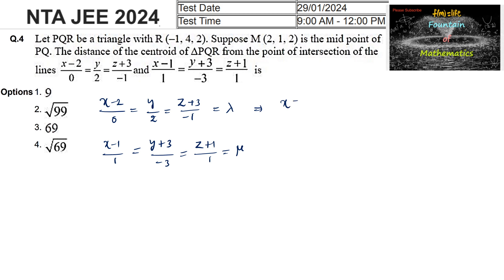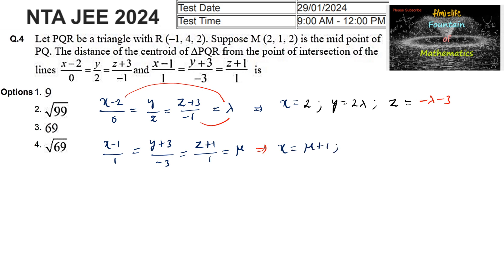From the first line, x−2 = 0·λ gives x = 2, y = 2λ, and z = −λ − 3. From the second line, x = μ + 1, y = −3μ − 3, and z = μ − 1.